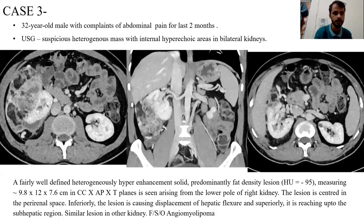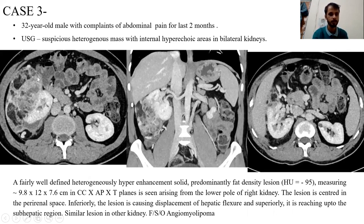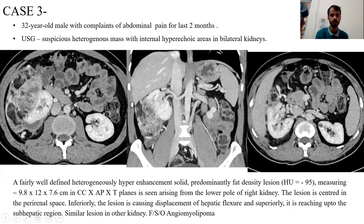Case 3: A 31-year-old male with complaints of abdominal pain for the last two months. Ultrasound showed a heterogeneous mass with internal hyperechoic areas in the right kidney. On axial and coronal CT images of the abdomen, there is a mass arising from the lower pole of the kidney showing internal fat-density areas. The mass is very large but still confined within the perinephric fascia and not extending beyond it. A similar but smaller mass is seen in the other kidney. The mass is displacing the adjacent colon. This is a case of angiomyolipoma.